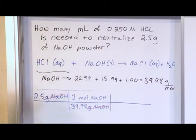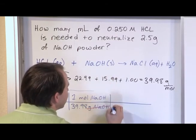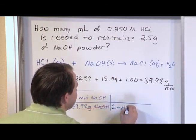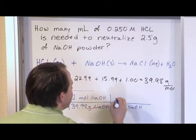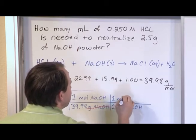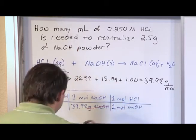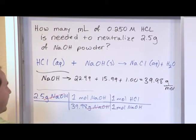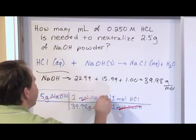Now it may be trivial, you may already see this, but basically the chemical reaction tells us that 1 mole of NaOH combines with 1 mole of HCl. So we're using the chemical reaction to basically jump from moles of NaOH to moles of hydrochloric acid.